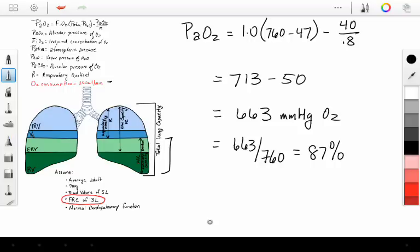So what does that mean? That means 0.87 times 3 liters is going to give us our amount of oxygen in the alveolus after appropriate pre-oxygenation. So that's going to be 2.617 liters, or 2,617 mLs of O2.